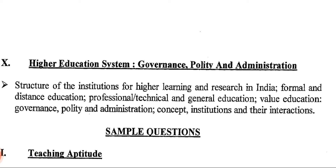Section ten, the last section, covers Higher Education System: governance, quality and administration, structure of institutions for higher learning and research in India, formal and distance education, professional, technical and general education, value education, governance, quality and administration concepts, institutions and their interactions. It is very extensive. You have to prepare thoroughly — you can't just go and sit in the exam after going through this syllabus alone; follow last year papers, otherwise it will be futile. The syllabus ends here: 100 marks, 50 questions, two marks each, ten marks per section.